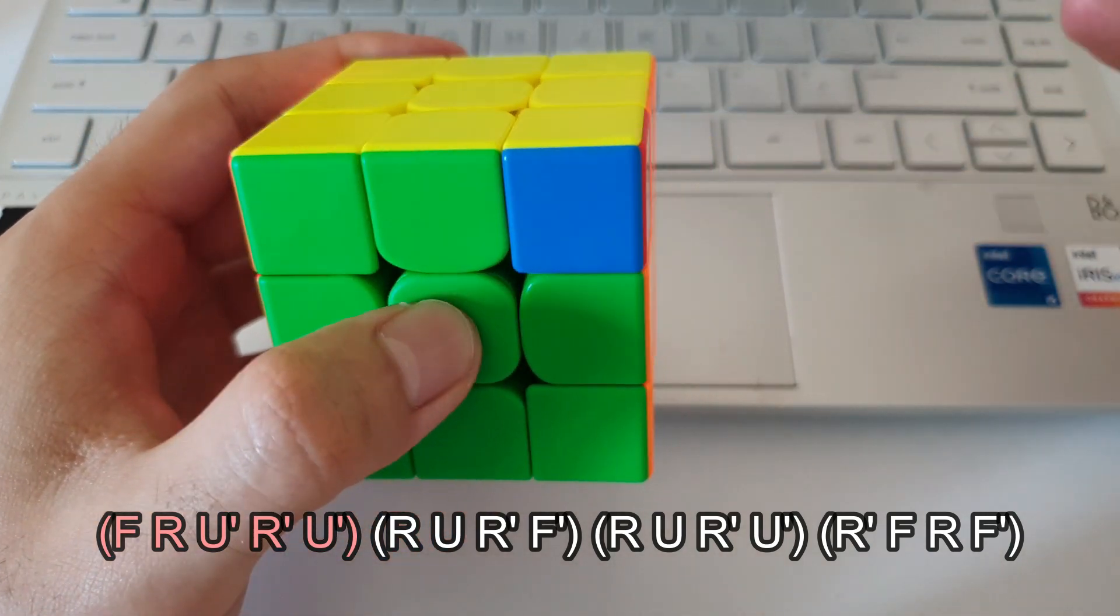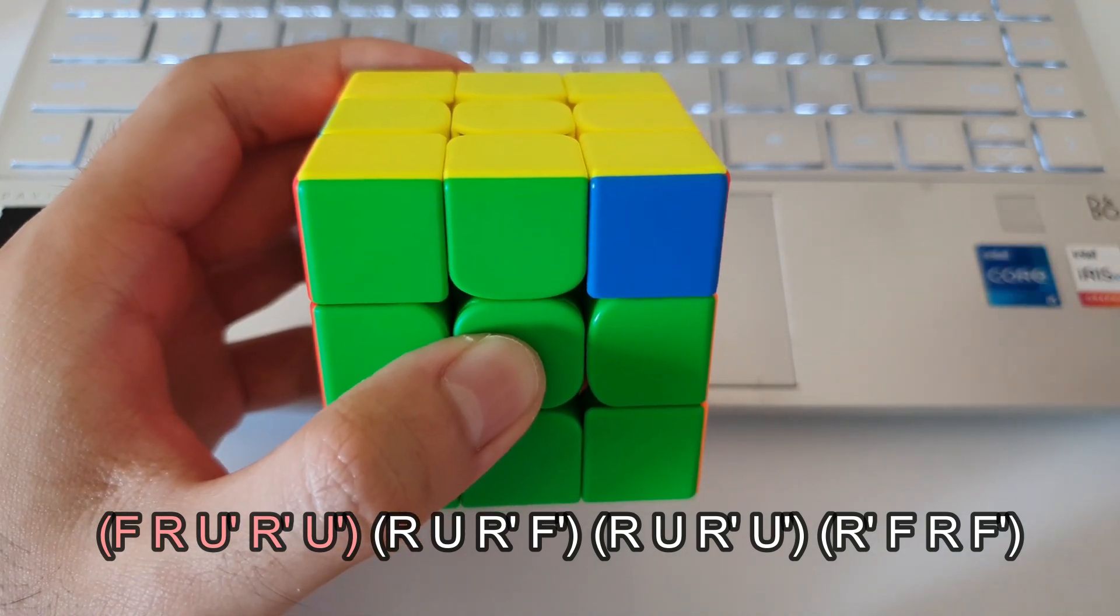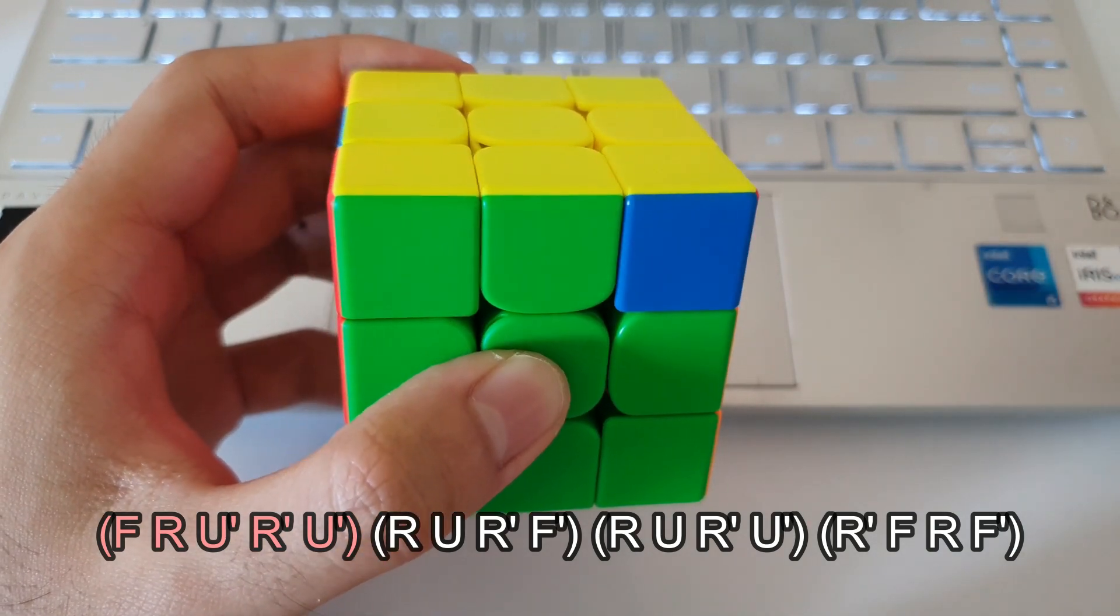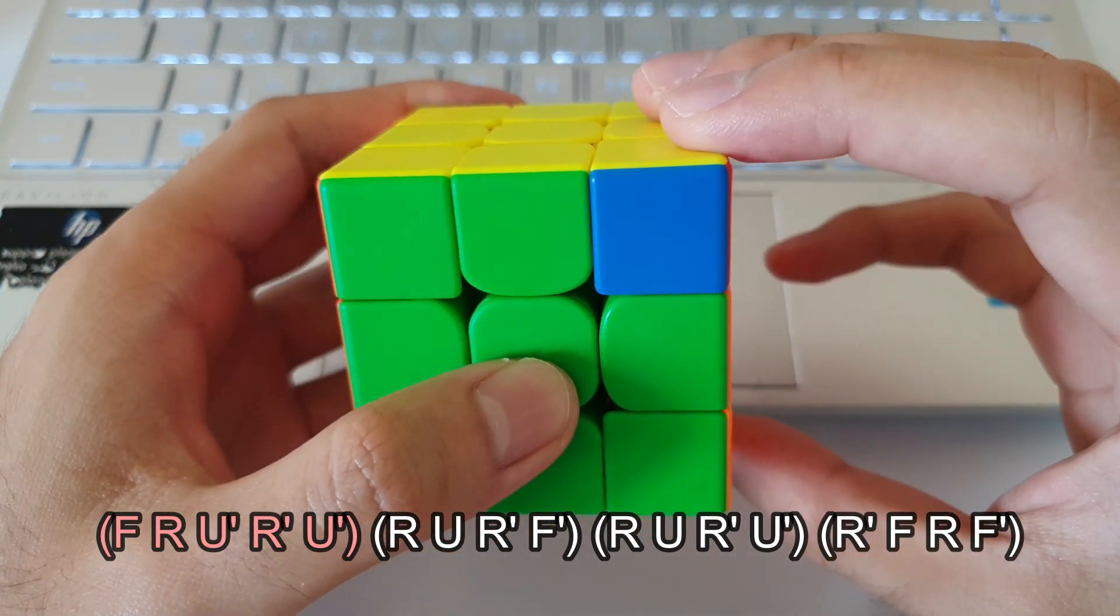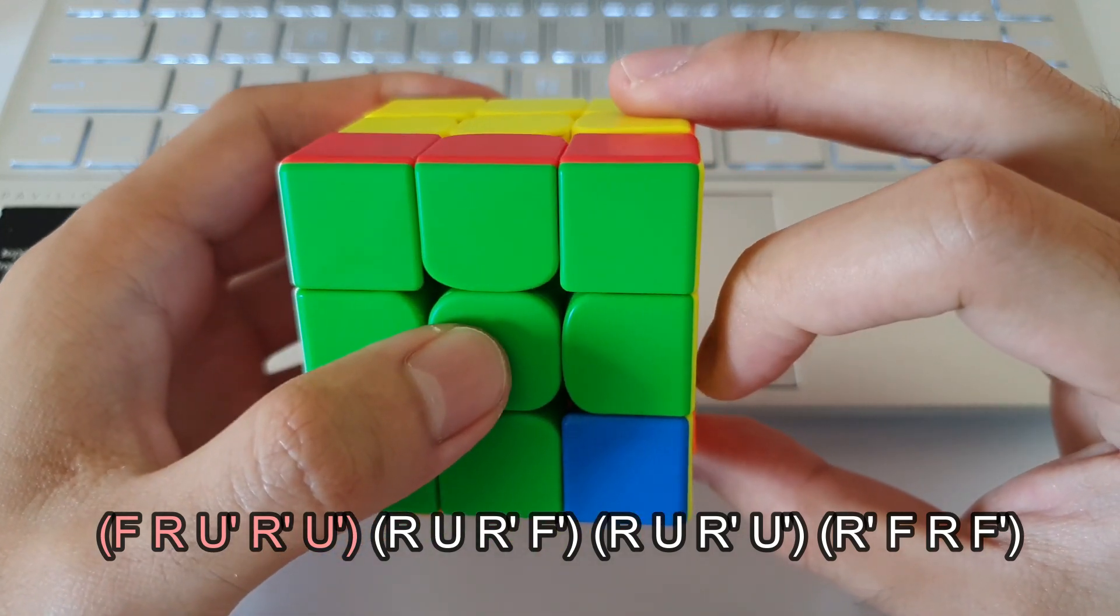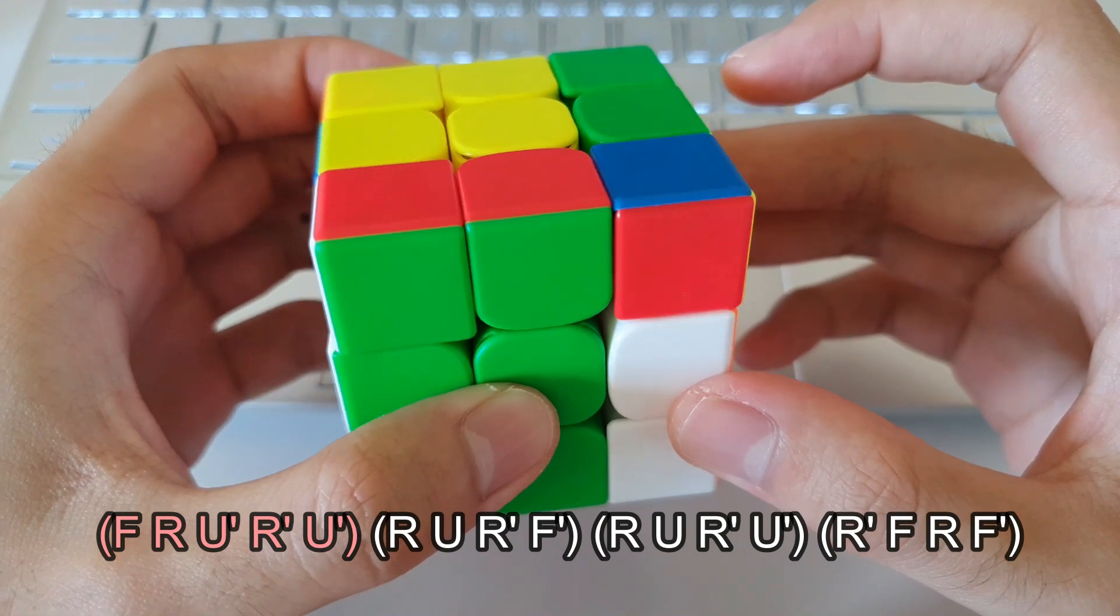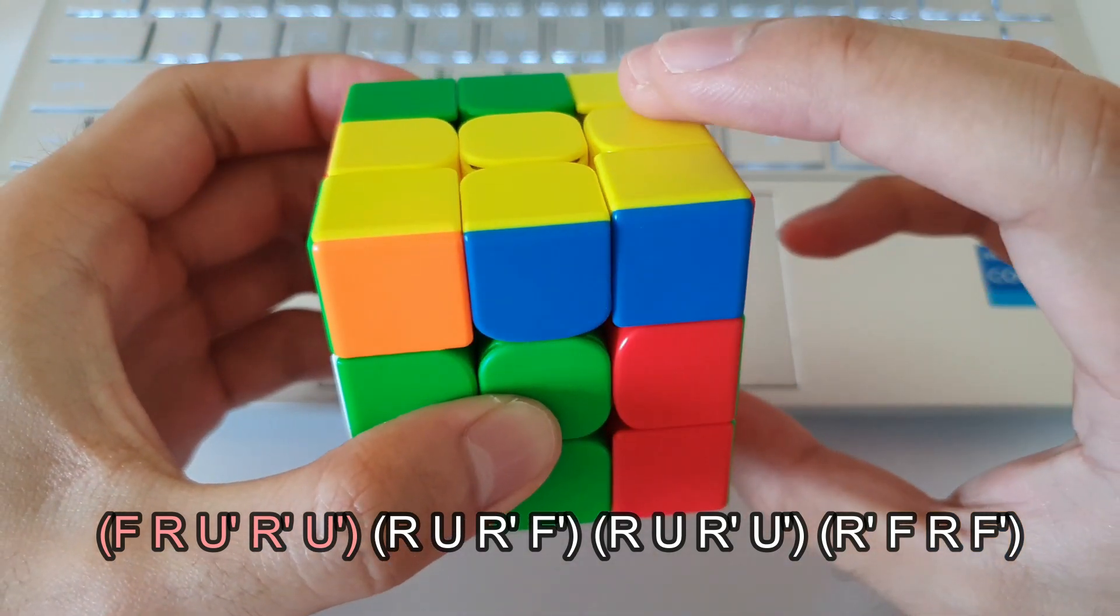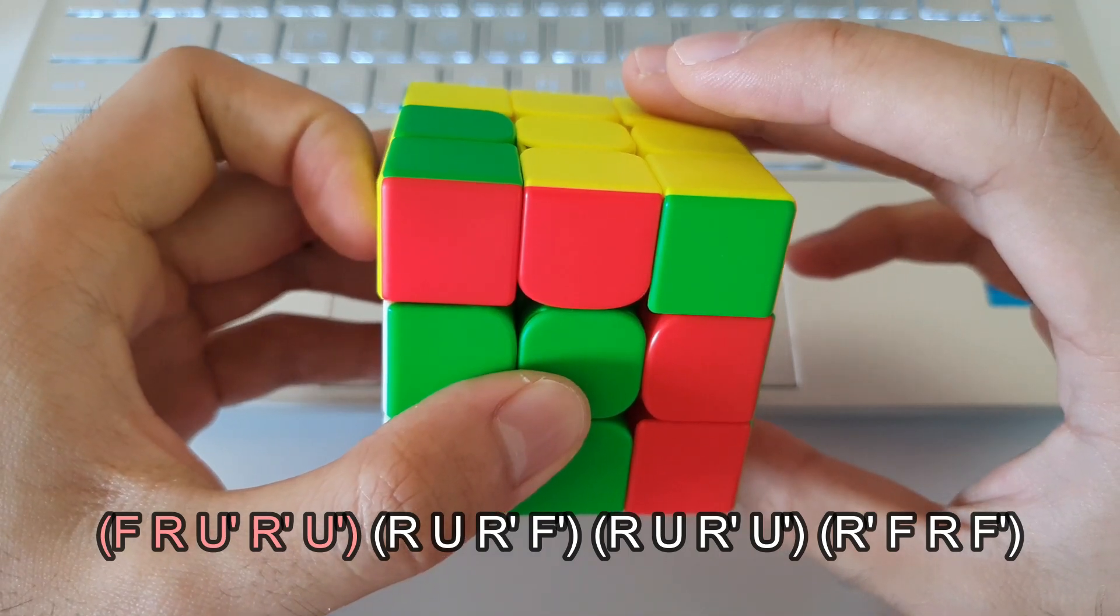So the first five moves, I like to just remember how my hands move rather than remembering the physical moves. Because I think that's easier to remember. So I always remember that I start with my index finger on the F layer, which does the first F move. And then my right hand going up, doing the R. And then U', R', U'. So not too difficult to remember, but will take some time to get used to.